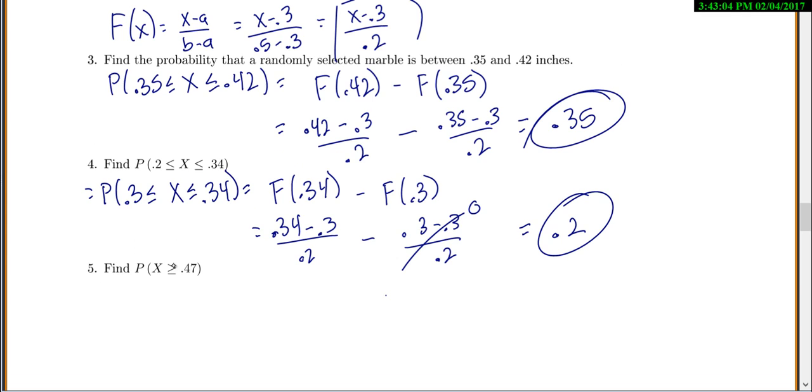Now, one last one. Find the probability now, but now we want x to be greater than or equal to 0.47. I can't just plug that into my CDF because my CDF always gives me probabilities of less than or equal to. But you could use the complement rule.